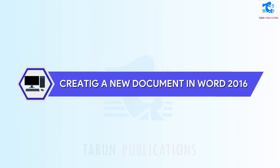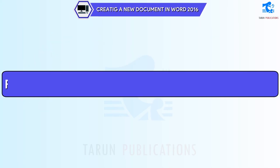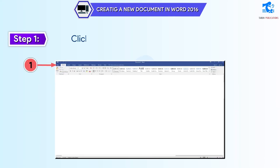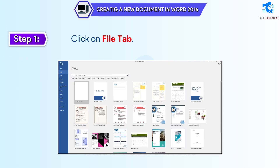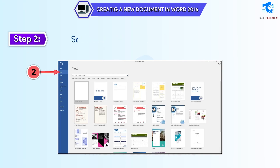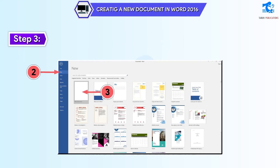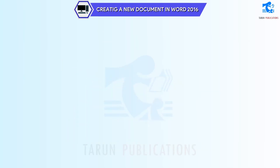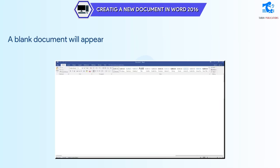Creating a new document in Word 2016: follow these steps to create a new Word document. Step 1: click on the File tab — the Backstage view appears. Step 2: select the New option from the left pane. Step 3: click on the Blank Document option in the right pane. A blank document will appear on the screen, and you can type your text in it.